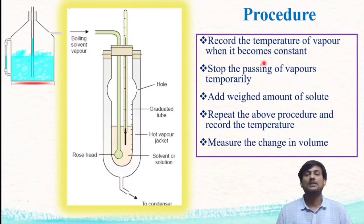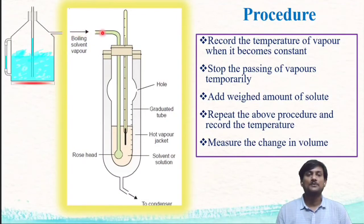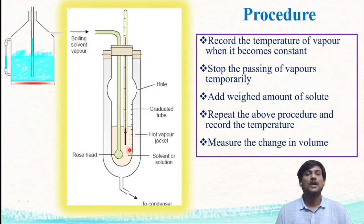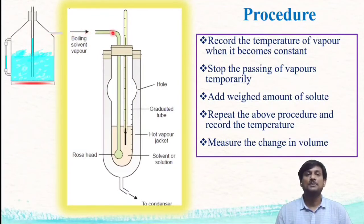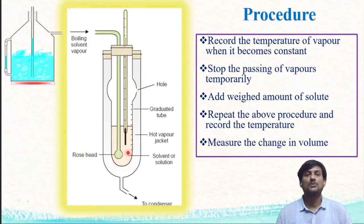We record the constant temperature when the vapors reach equilibrium. After recording the boiling point of the solvent, cut off the passing of vapors into the inner tube. Next, add a weighed amount of solute into the inner tube and follow the same earlier procedure: boil the solvent in the boiling flask and pass the vapors of the solvent into the solution through the rose head tube. There is a boiling of solution, and when there is boiling of solution, there is a constant temperature that indicates the boiling point of the solution. Record that constant temperature.